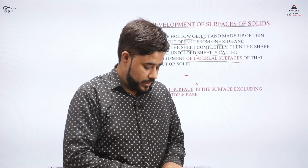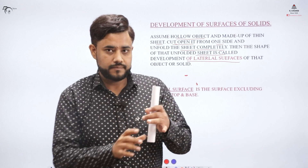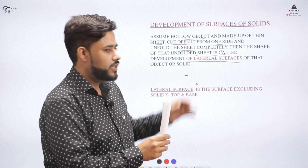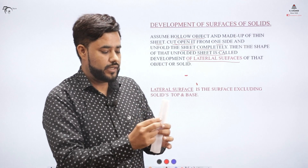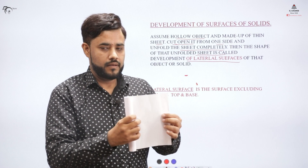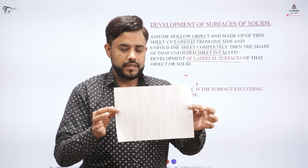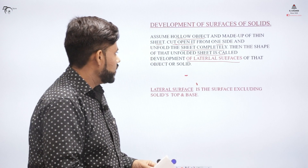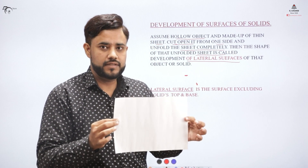Let me explain this concept with the help of a plain piece of paper. Say we have this cylinder — we cut it from one side and unfold it. The material of the sheet that we get is for the lateral surface.